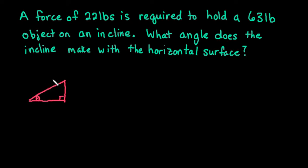And what we have is a force going this way of 22 pounds. We have an object sitting on this inclined surface. This object weighs 63 pounds. So if we draw our direct downward motion, there's 63 pounds to keep it on this surface.